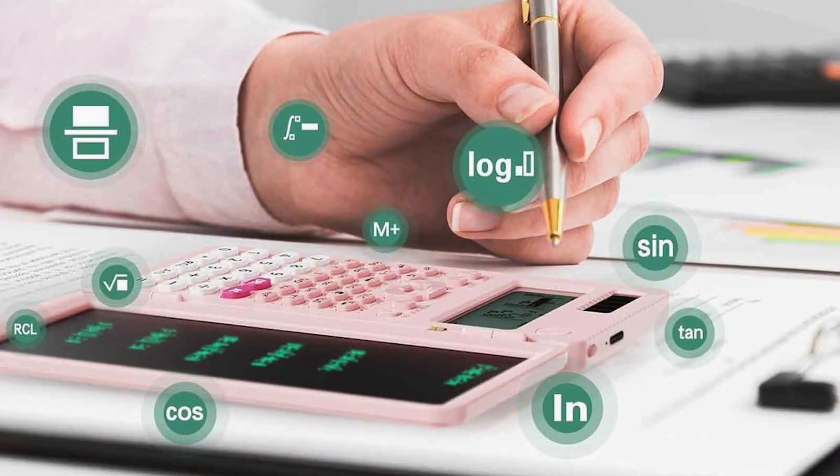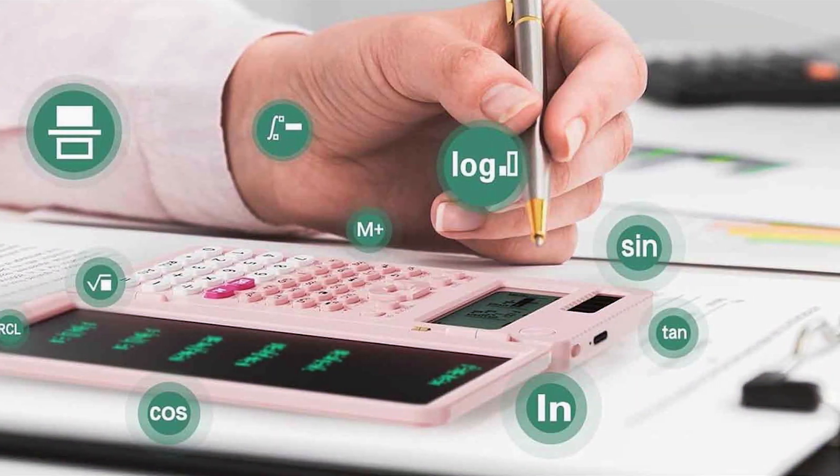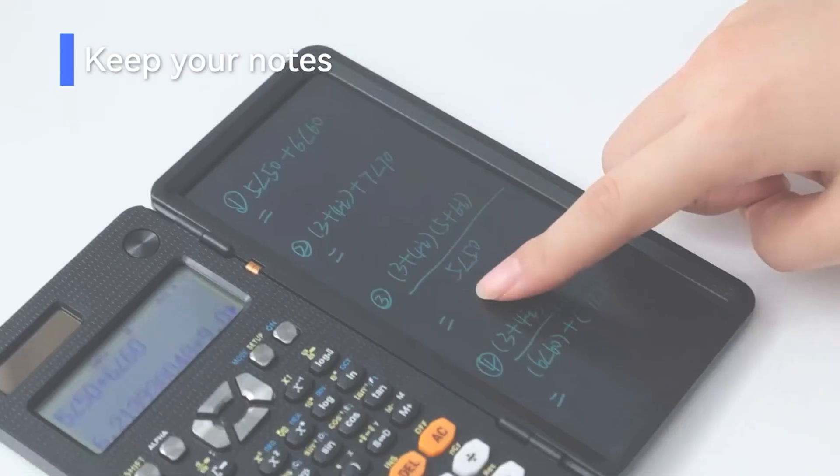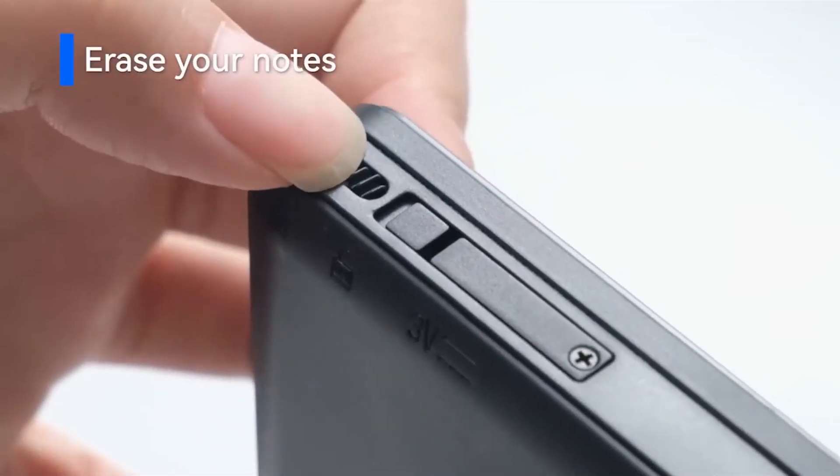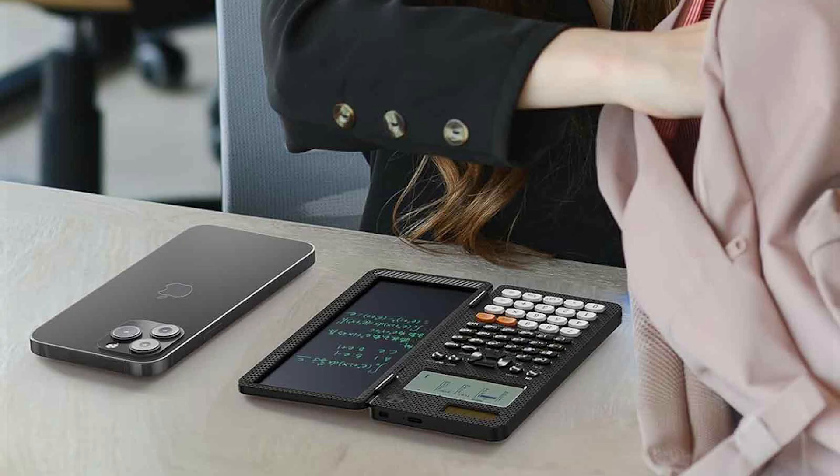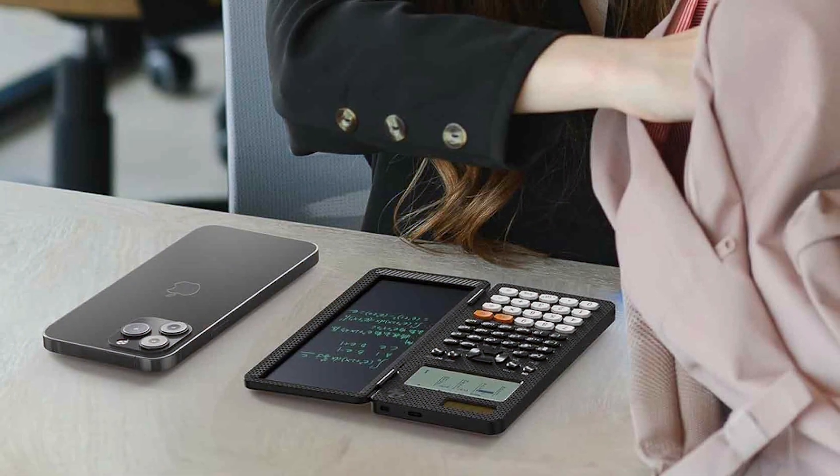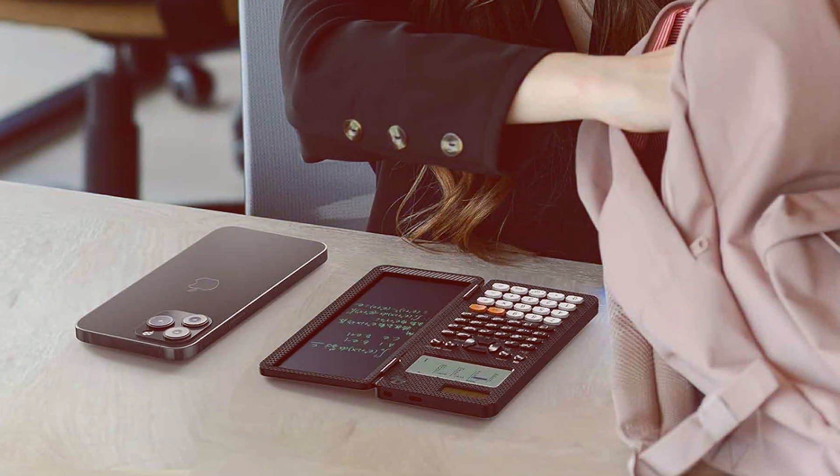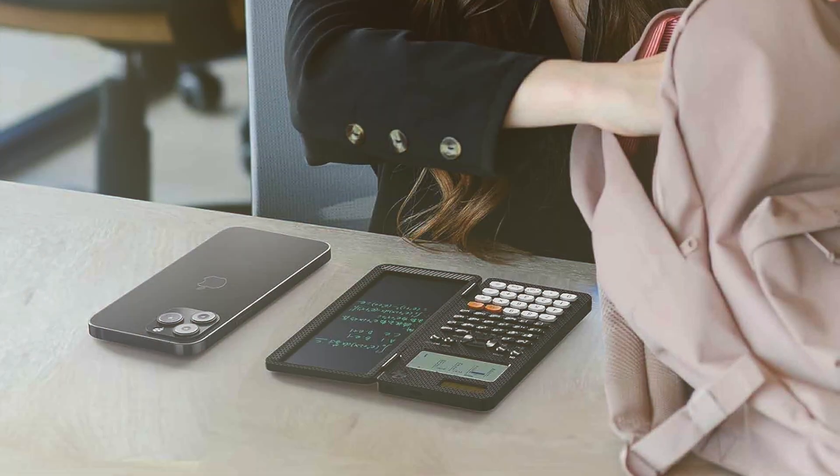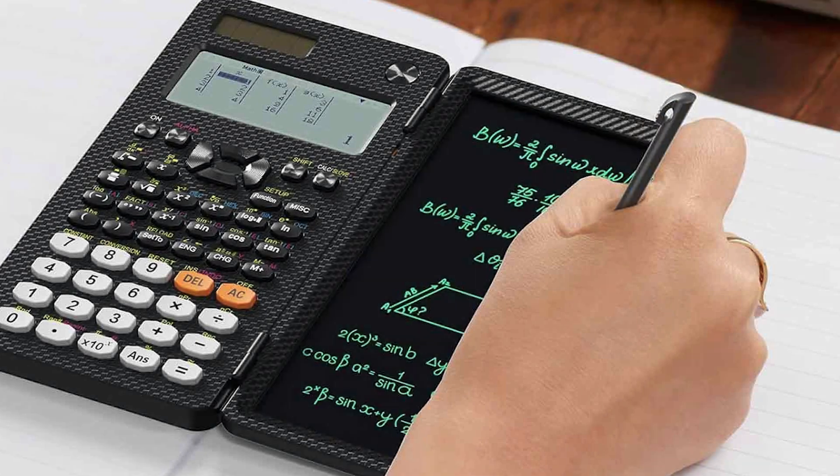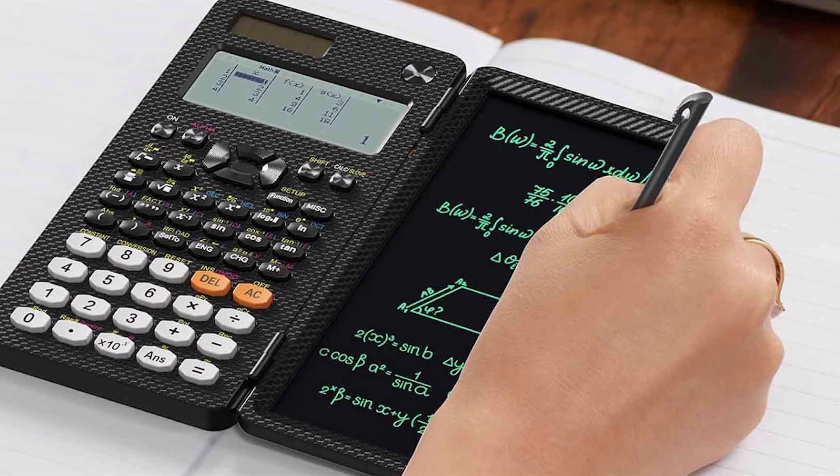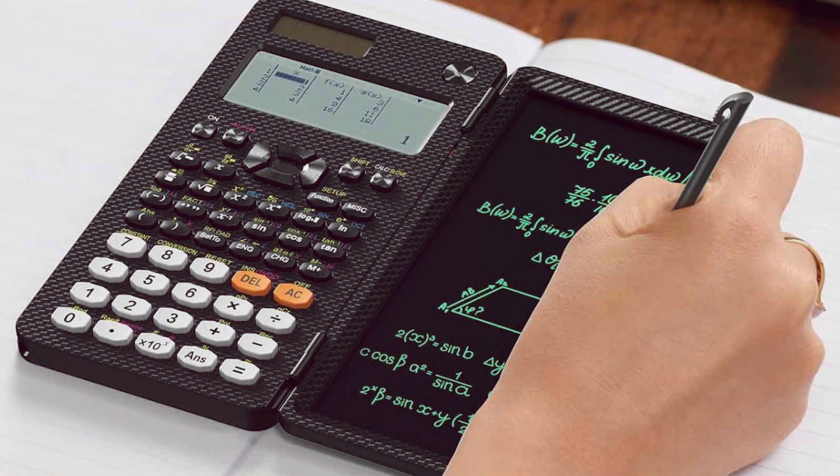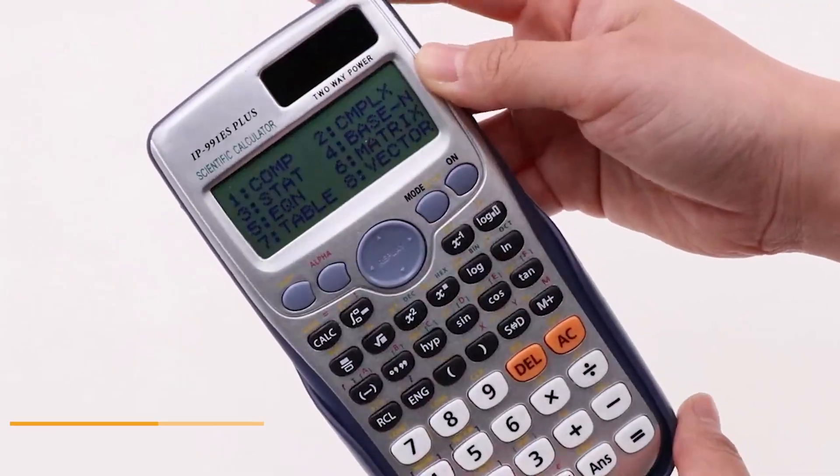The quality of the ROATE 991ES Plus is evident in its advanced functionality. It offers a wide range of features, including 417 functions, making it one of the most comprehensive calculators available. This model supports complex calculations, including calculus, statistics, and trigonometric functions. The calculator's multi-line display enables users to view multiple calculations simultaneously, facilitating a better understanding of problem-solving steps.